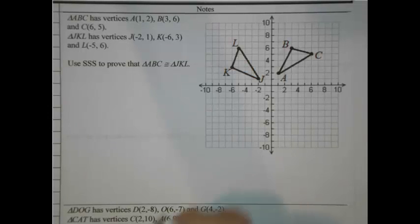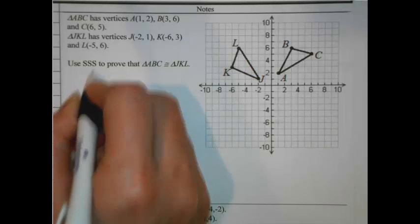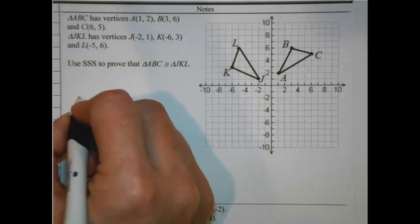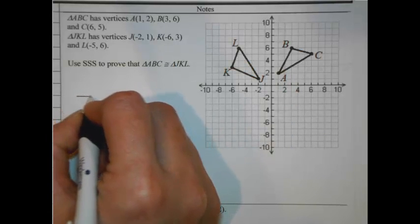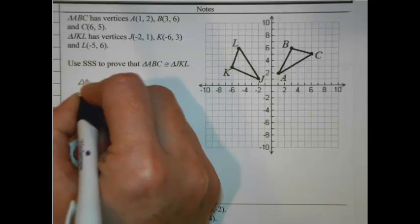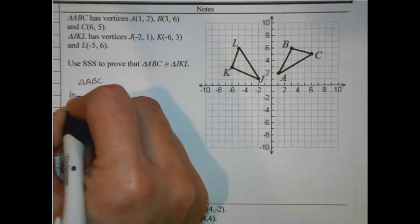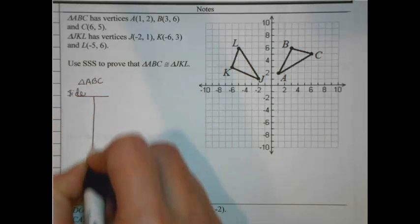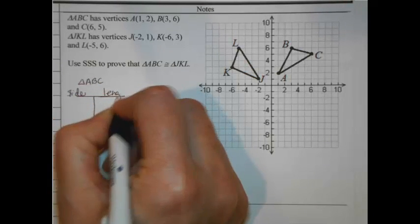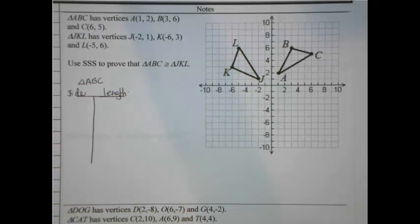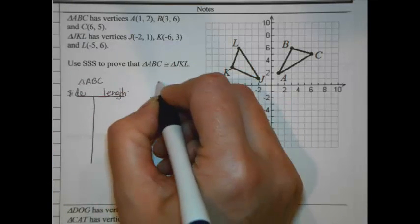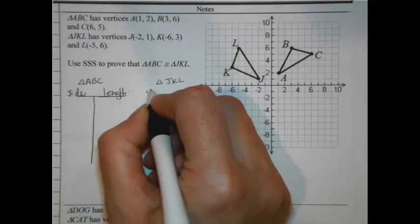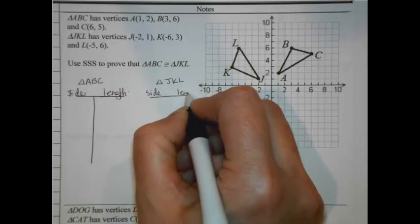So to help you out with that, we're going to build a table. Our job is to use side-side-side, so we're going to be calculating the lengths of every side in these triangles. Let's have one here for triangle ABC - we'll list the sides and then the lengths for those sides - and then let's do a similar table over here for triangle JKL. In column one we'll put the side name and then in column two we'll put the length that we find.